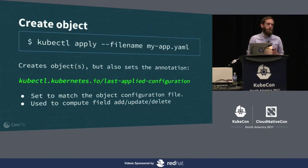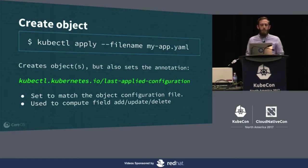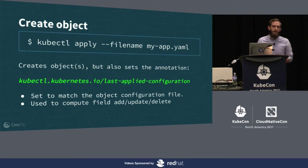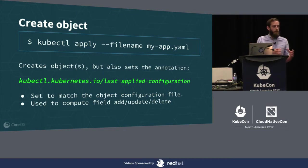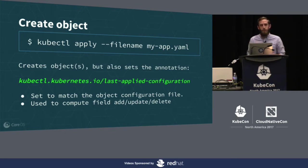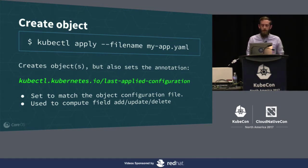Let's start with creating an object - pretty straightforward. kubectl apply with a filename creates the object in the cluster, but it also sets a special annotation on the object called the last applied configuration. The contents of this annotation are set to match what you're applying to the cluster. This is used to later compute whether an action is going to add, update, or delete a field, because you're tracking what you did before and what you're doing now.